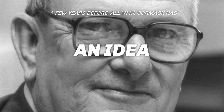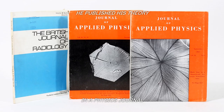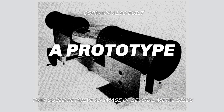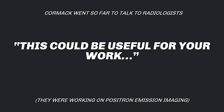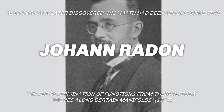While Hounsfield pondered this, South African-born American physicist Alan M. Cormack had a similar idea earlier: reconstructing an image out of slices through a biological sample. He published his theory in a physics journal and built a prototype that could retrieve an image of metal discs embedded in a plastic rotating container. Cormack even offered his idea to radiologists, but most were uninterested or found it impractical. He later discovered that his math had already been discovered by Johann Radon in a 1917 paper — which must have been pretty frustrating.